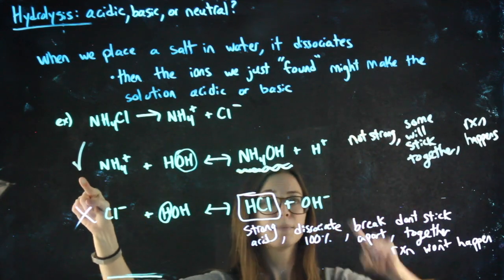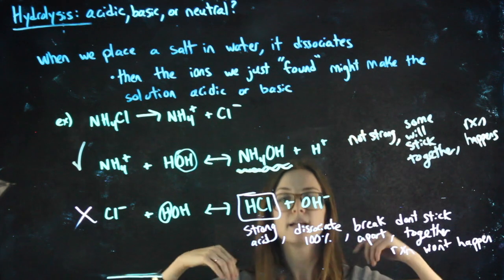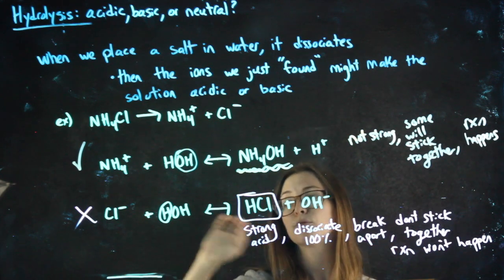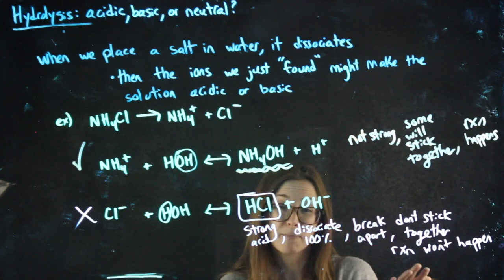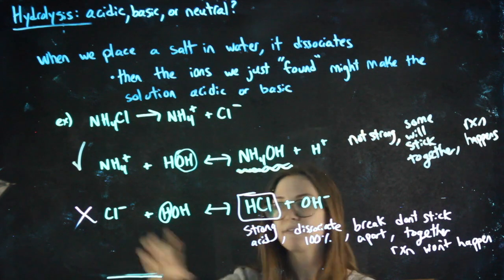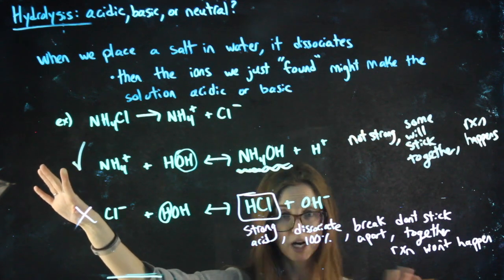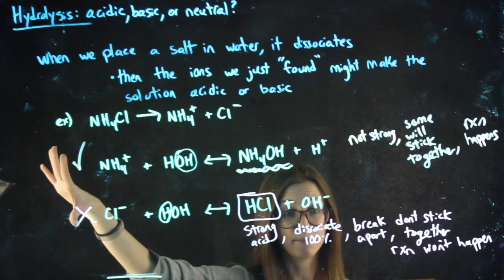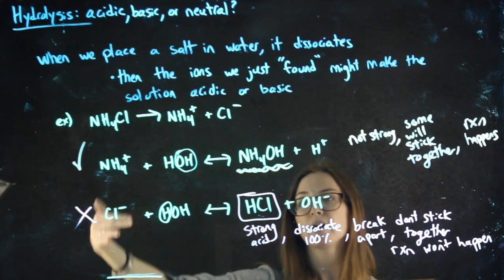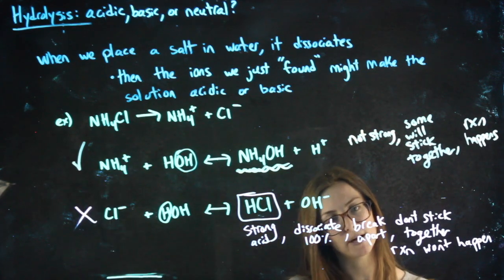So, if the reaction that happens releases H+, it's an acidic solution. If the reaction that happens is OH-, it's basic. You'll never have both of them working. Not a thing. If they both don't happen, it must just be a neutral solution. No reaction happened that released H or OH.